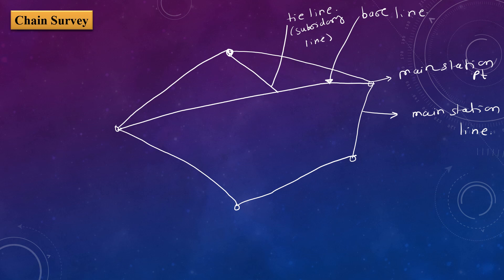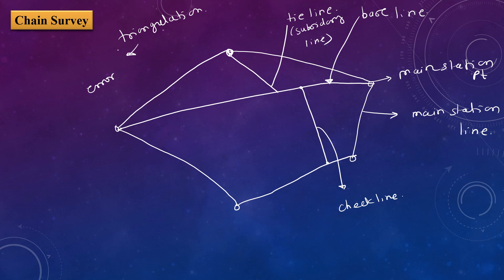The check line is the line between the baseline and a main station line. It is used to check the accuracy of the field work. This entire process is known as triangulation. By using triangulation, we reduce or eliminate errors during surveying. Thank you for watching this video.